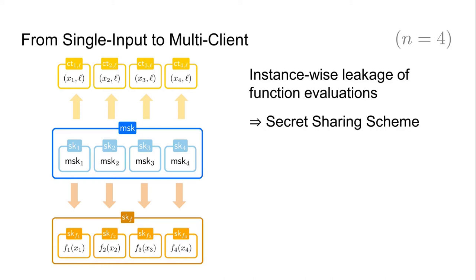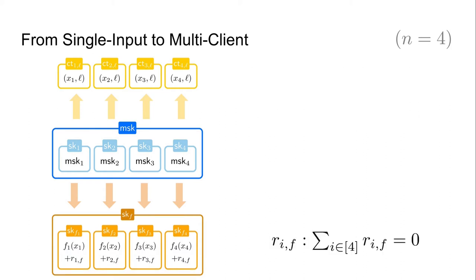To achieve this, we rely on a secret sharing scheme of zero. Instead of letting each functional key simply output the evaluation of the single-input function, the key generator generates a secret sharing of zero and hardcodes one of the shares, r_{i,f}, into each of the individual keys. When the individual keys are evaluated, they output the evaluation of the single-input function plus the share r_{i,f}. Summing up all the outputs then gives the desired separable function evaluation, and as long as the decryptor has no knowledge about the different shares, nothing about the single-input function evaluations is leaked.